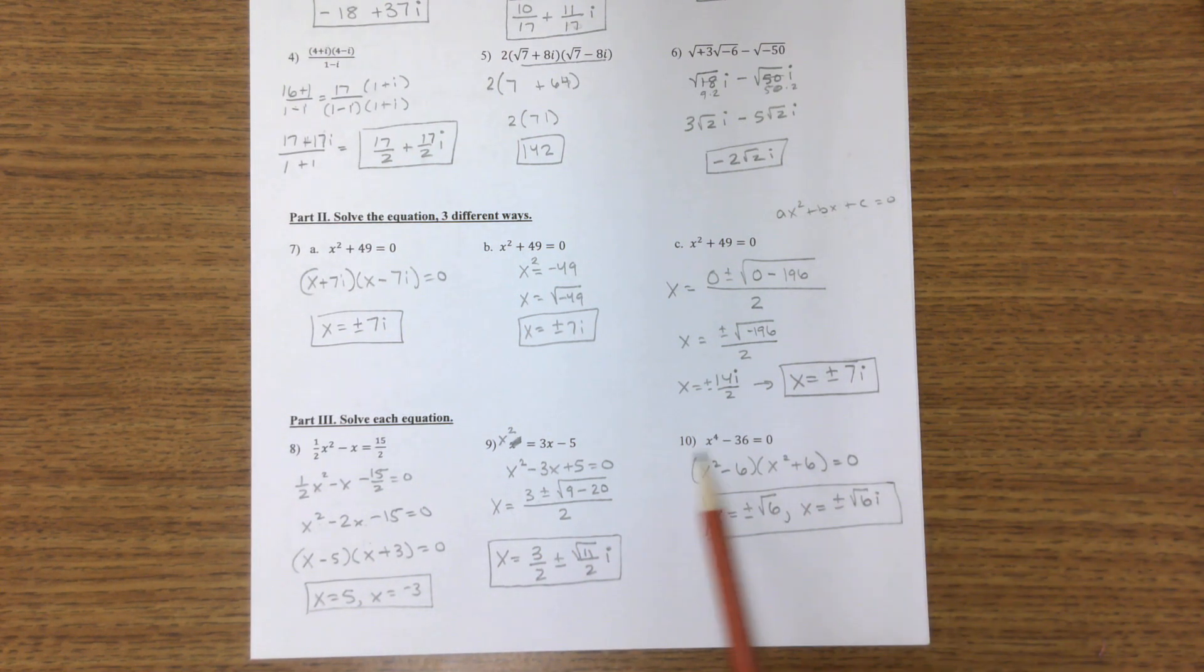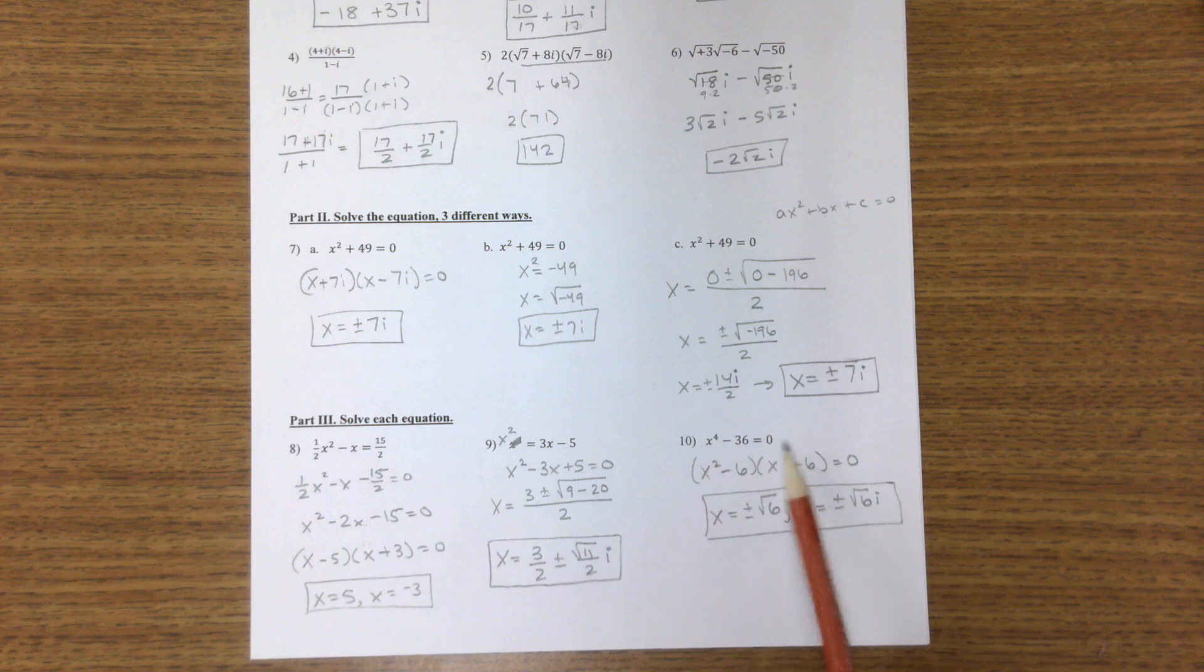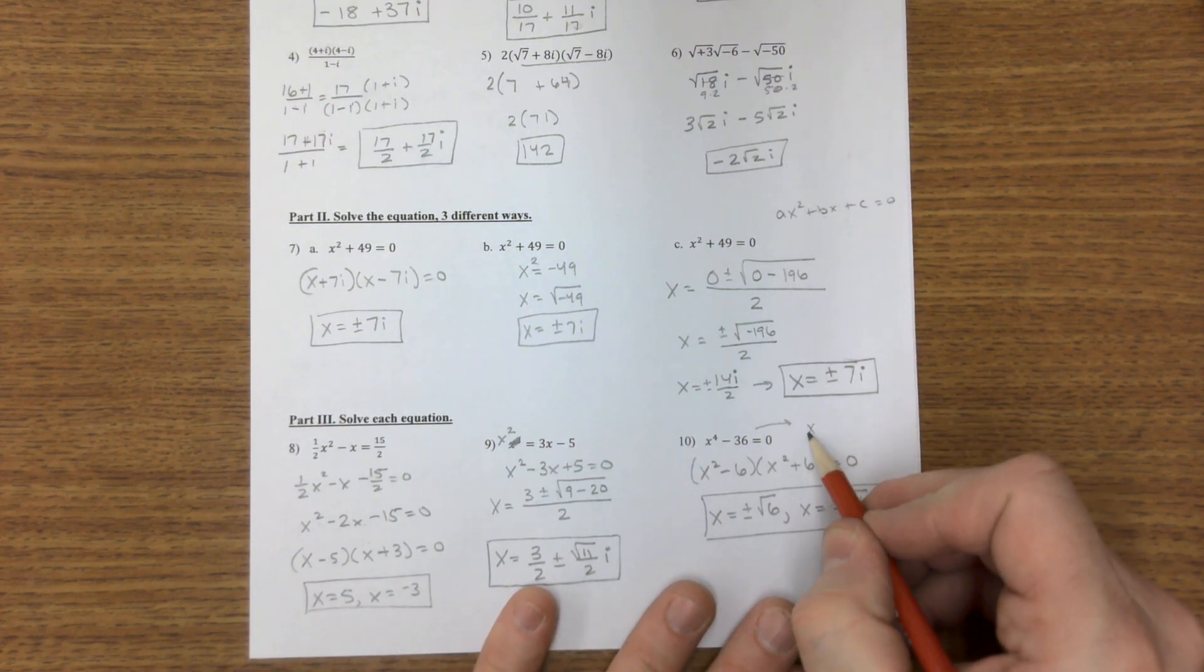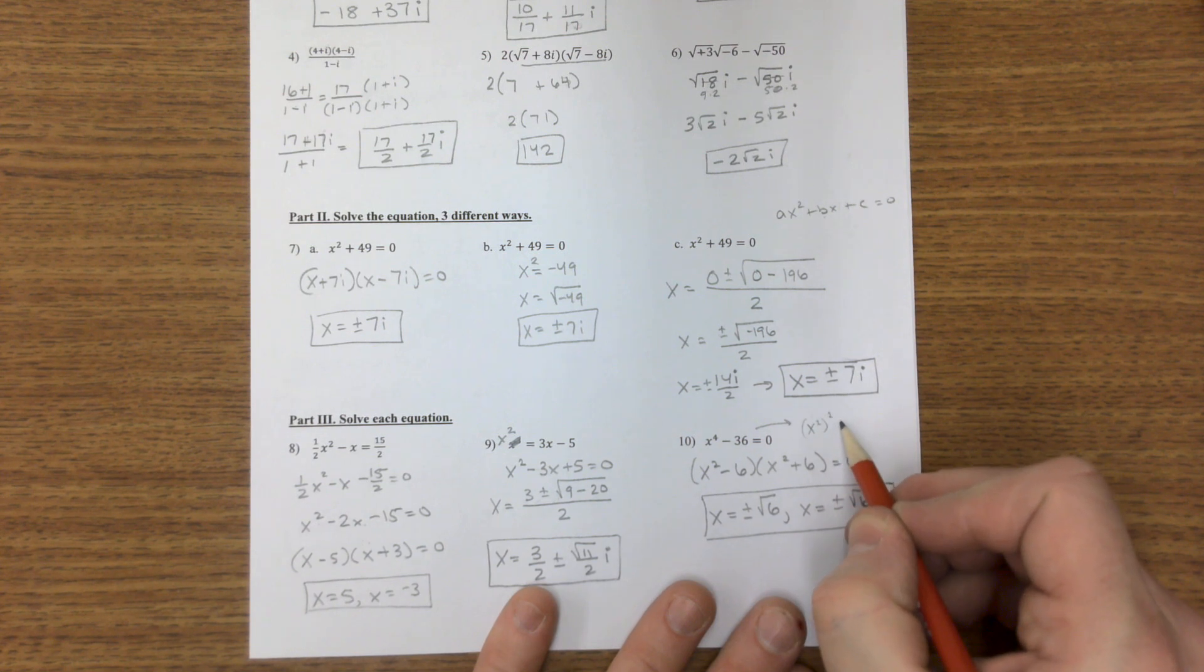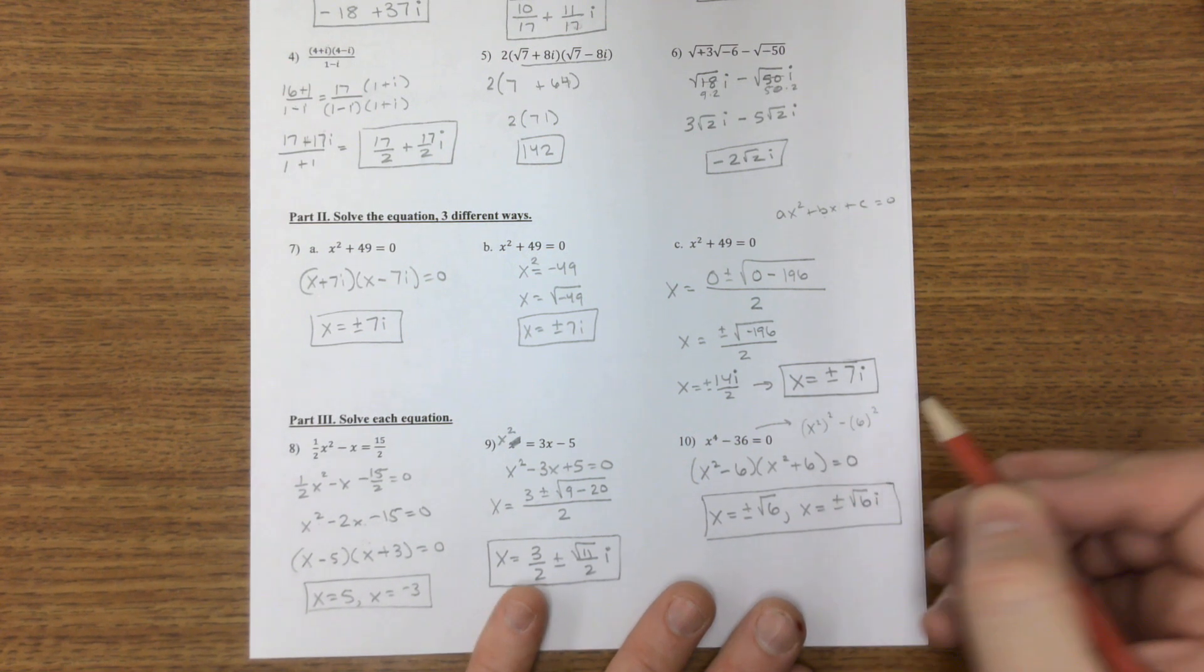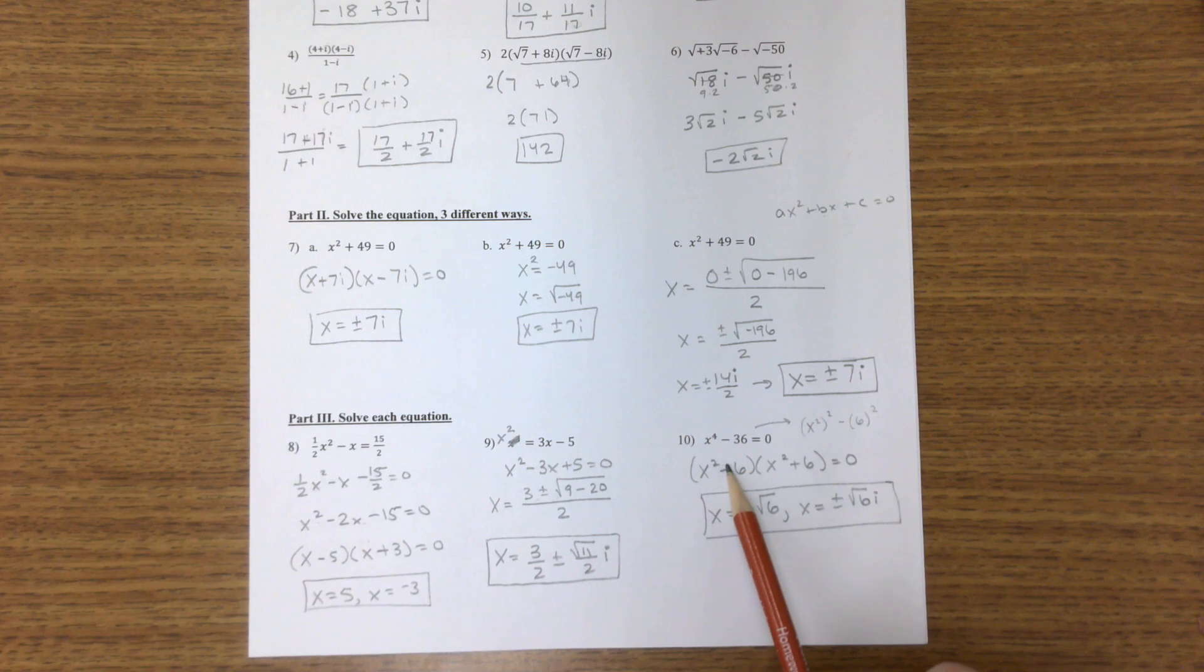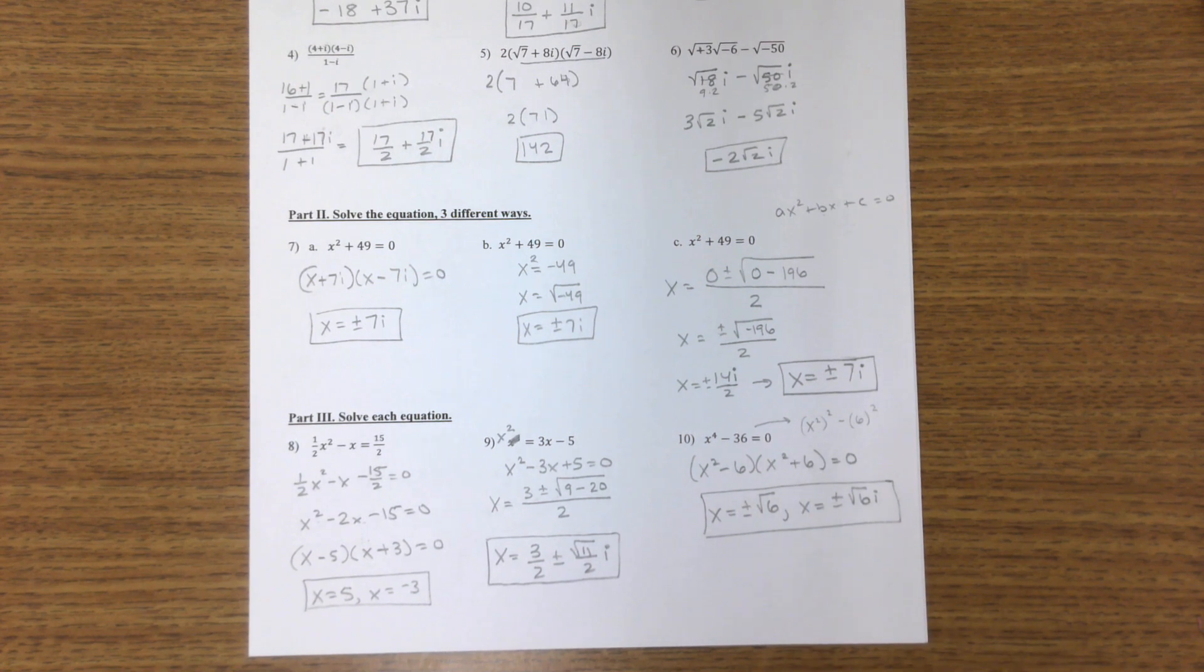And on the second one, or number 10, I went ahead and factored this. This is a difference of squares. What you could do is write this as x squared being squared minus 6 being squared, so we have x squared minus 6, x squared plus 6.